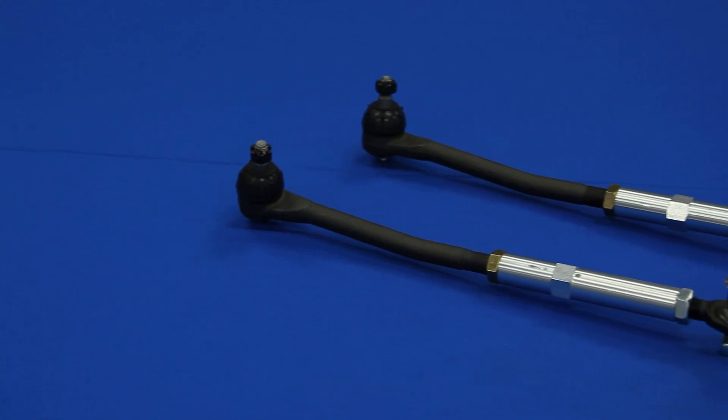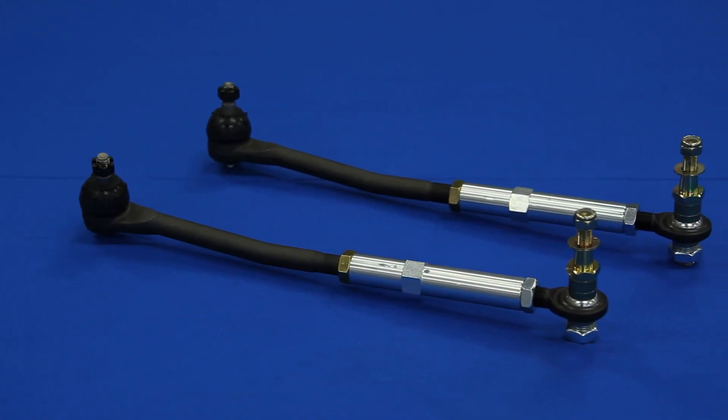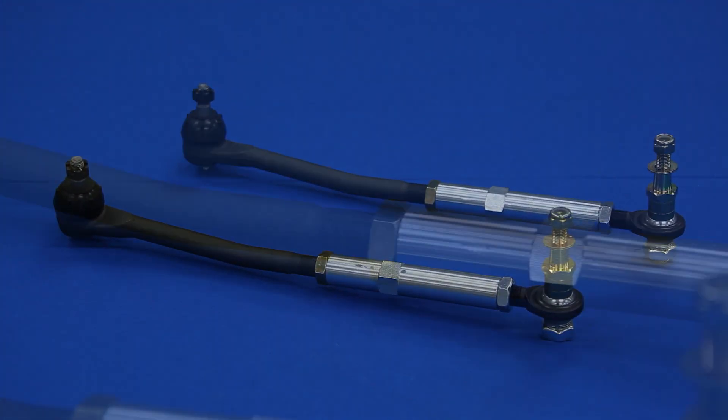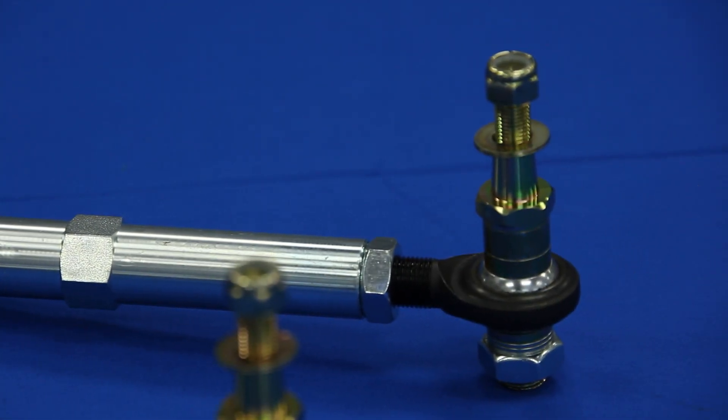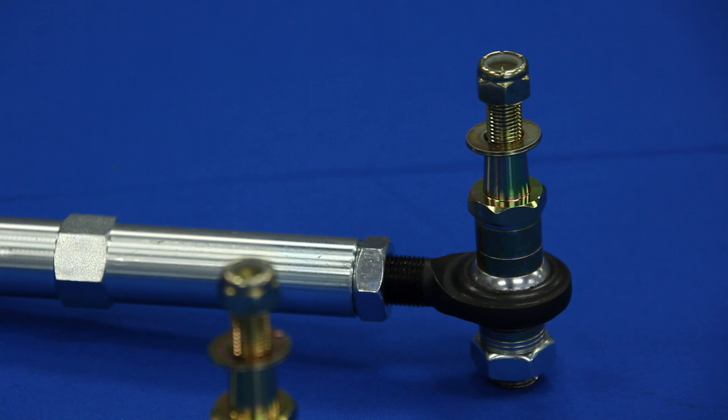The Total Control Products Bump Steer Kit replaces the factory outer tie rod and adjusting sleeve with an extended billet steel sleeve and a high-strength 4130 body rod end.